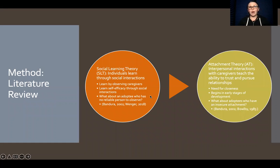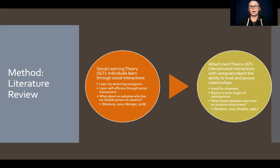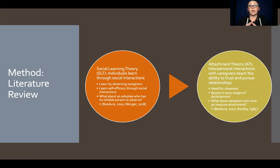I used a literature review as my method, along with two key theories — social learning theory and attachment theory — to think about these adoption-related issues and formulate a conclusion.